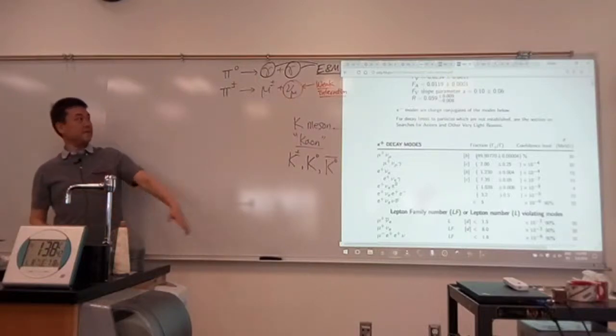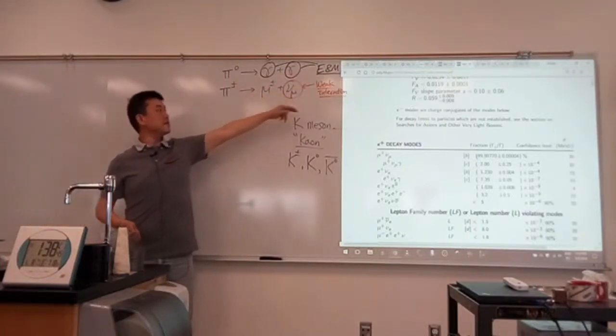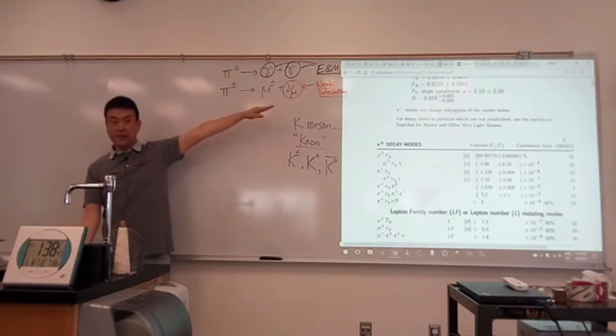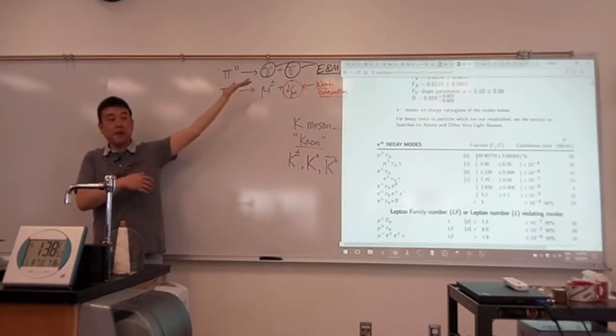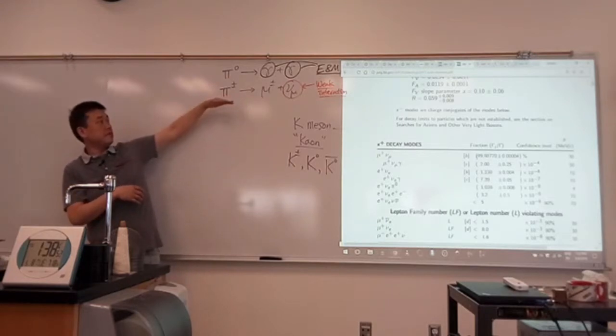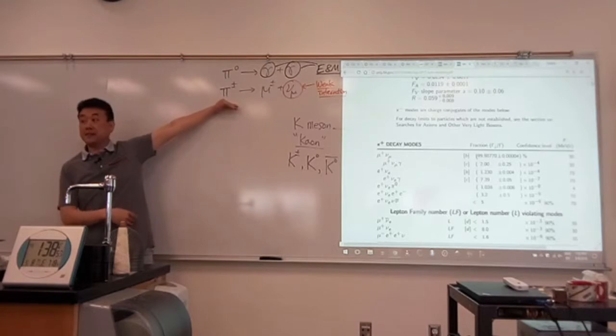So once you accept that this is how these decays happen, then sure, they are explained. So the question is, why do they have to be that way? Why couldn't the decay of the charged pion happen through electromagnetic decay?